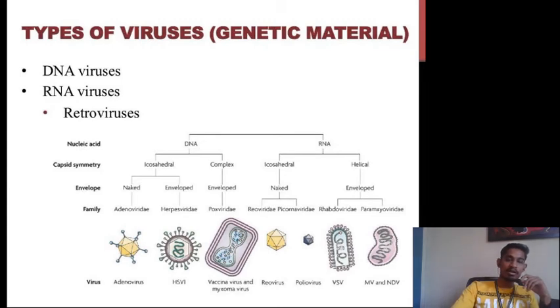In the helical category of RNA viruses, the further classification is enveloped helical RNA viruses, which also consist of two representative families: rhabdoviridae and paramyxoviridae, the examples of which are VSV, MV, and NDV (Newcastle disease virus).